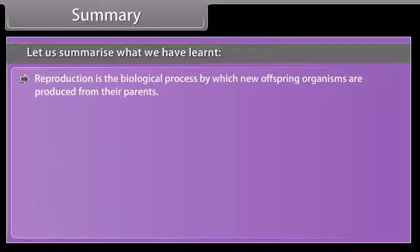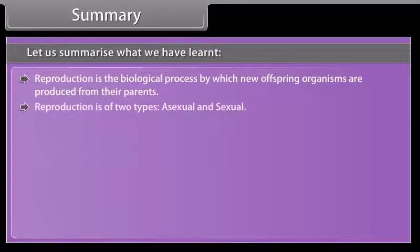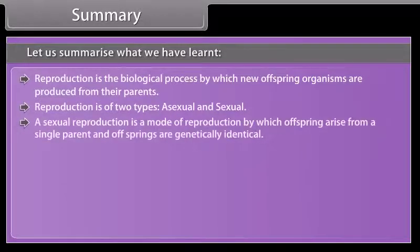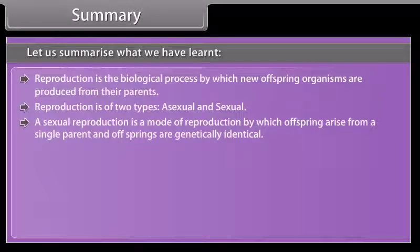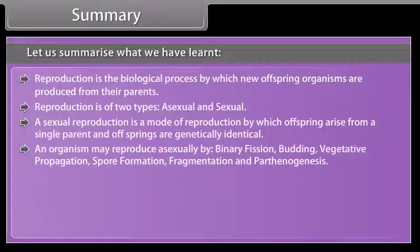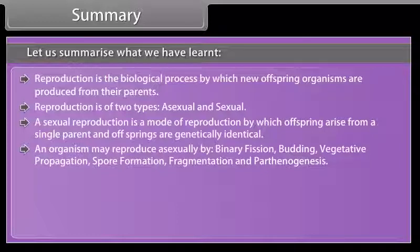Let us summarize what we have learned. Reproduction is the biological process by which new offspring organisms are produced from their parents. Reproduction is of two types: asexual and sexual. Asexual reproduction is a mode of reproduction by which offspring arise from a single parent and are genetically identical. An organism may reproduce asexually by binary fission, budding, vegetative propagation, spore formation, fragmentation, and parthenogenesis.